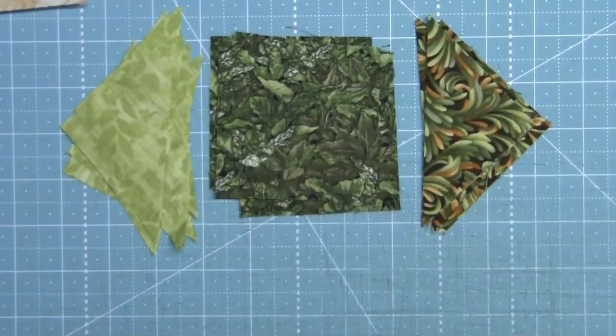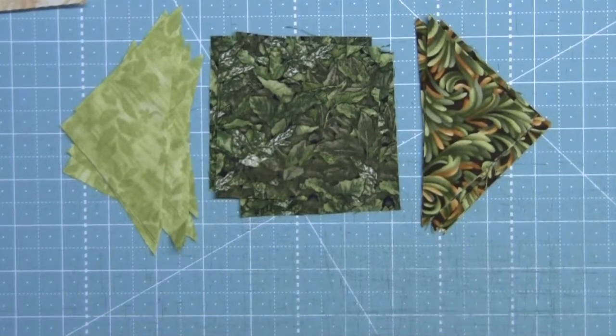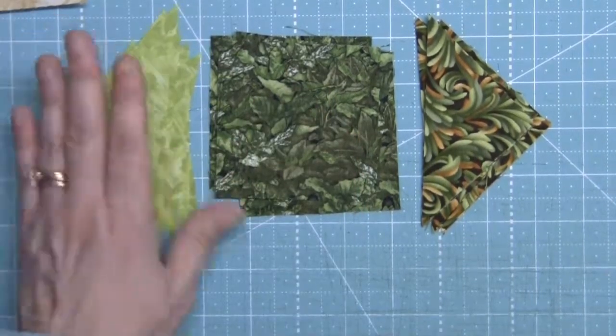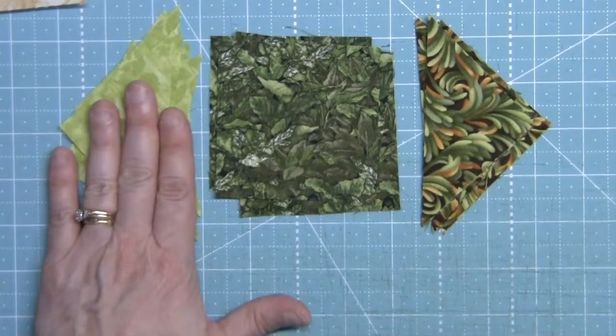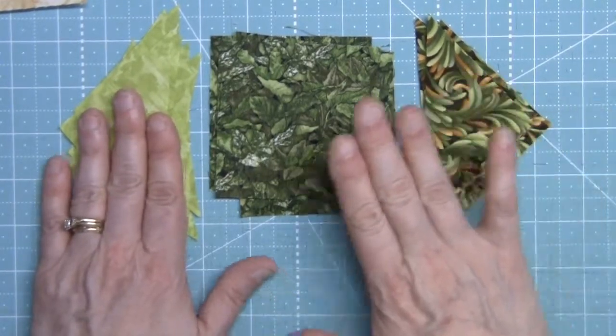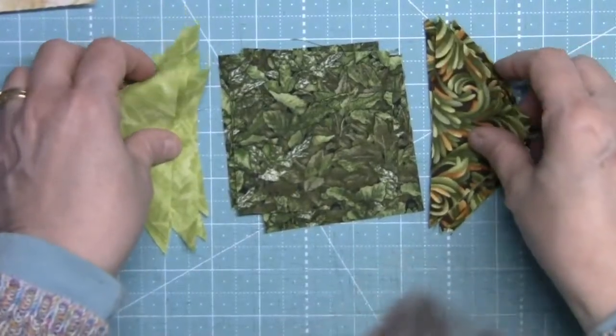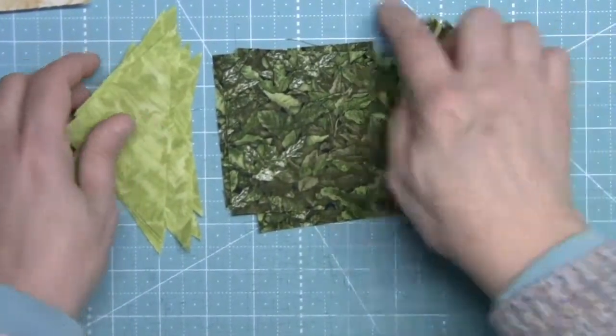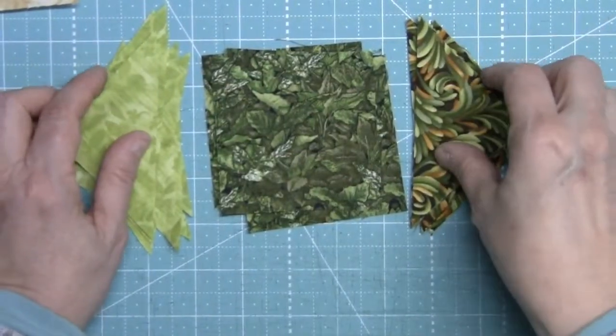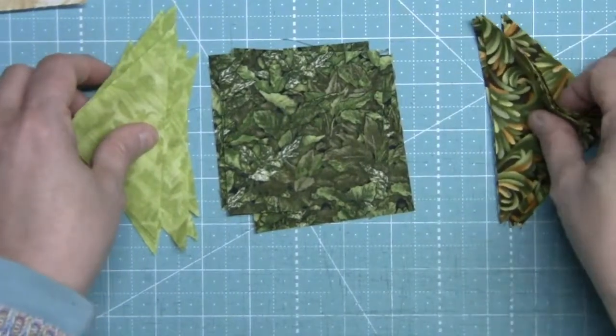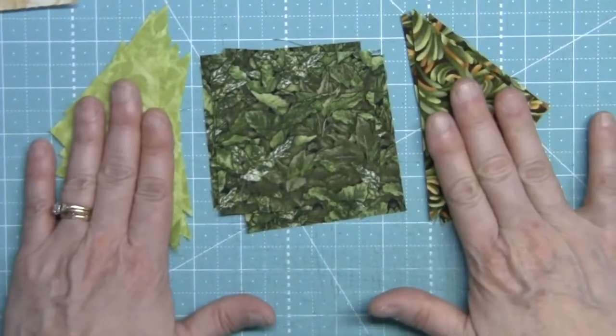Now we need to make the rest of our square in a square units, and these are going to be done a little bit differently. Here now we have fabric B triangles, fabric F triangles, and fabric C squares, and we've got four. We're going to make four sets of these, but now instead of having the same triangle all the way around, what we're going to do first is we're going to put a B on one side and F on the other side.